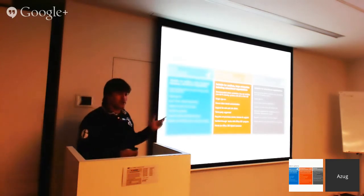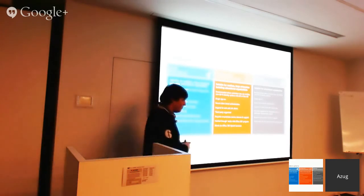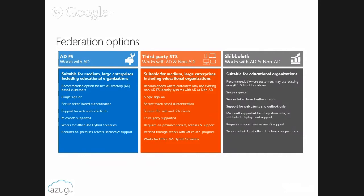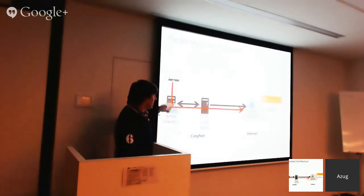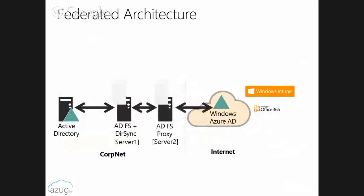ADFS works well. Third-party STS options are also available. Shibboleth is really interesting — connecting Windows Azure AD and Shibboleth is possible but painful. You do it once and you think, yeah, now I know how it feels. For federated authentication you have directory sync and the ADFS proxy in order to allow the authentication flow.